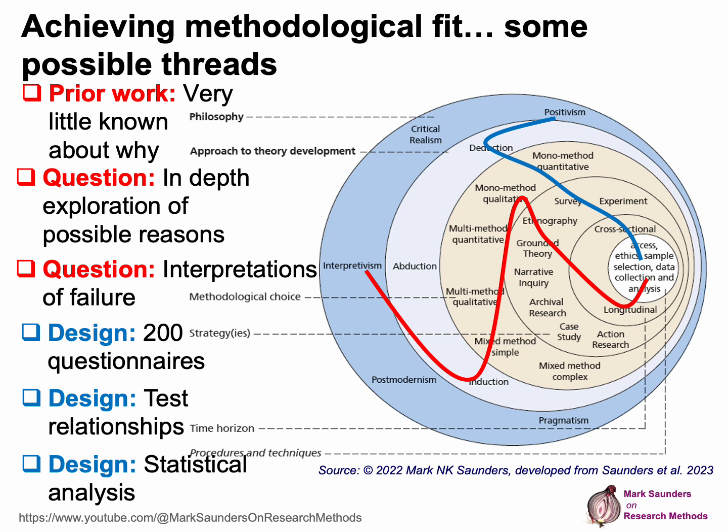However, if we were to start with a design of 200 questionnaires, we need to work this back. That's likely to be formed from a positivist philosophy. We'd be testing theory, so we'd be doing a deductive approach to theory development. We know there were 200 questionnaires — a mono-method quantitative choice. Within that we have undertaken a survey, doing cross-sectional research, and we're going to do statistical analysis to test relationships from the data collected in our questionnaire. What's important to see here when we look at the onion is that the golden thread — in this case a red thread and a blue thread — does not run straight across the onion. It moves back and forth to find what is appropriate and to achieve methodological fit.